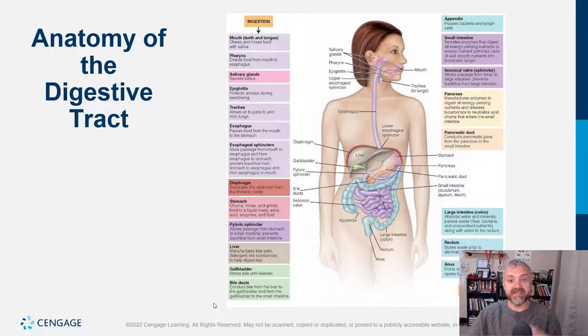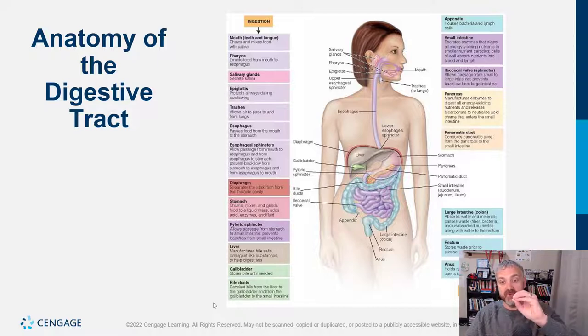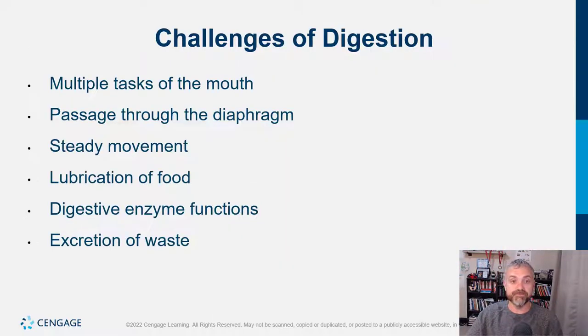So that's everything — from ingestion, deciding what to put in your mouth, mechanical digestion, chemical digestion, absorption, and elimination. That's the ten-thousand-foot view.